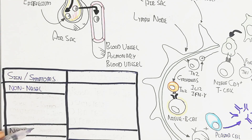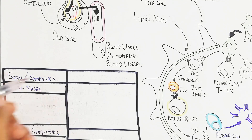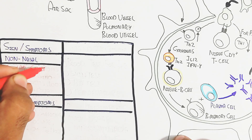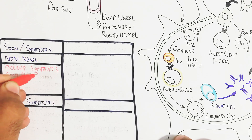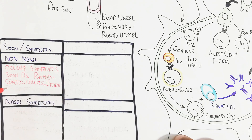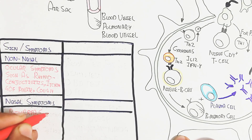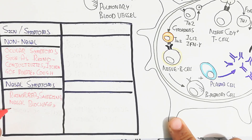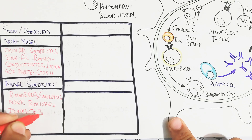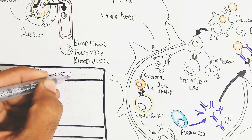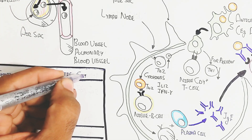The signs and symptoms of allergic rhinitis include non-nasal and nasal symptoms. Non-nasal symptoms include ocular symptoms such as watery eye discharge and rhino-conjunctivitis, where secretion from the eyes drains into the nose, along with palate itching and cough. Nasal symptoms include rhinorrhea, sneezing, nasal blockage, and nasal itching.